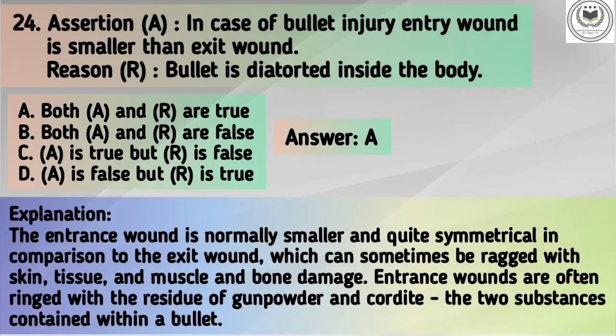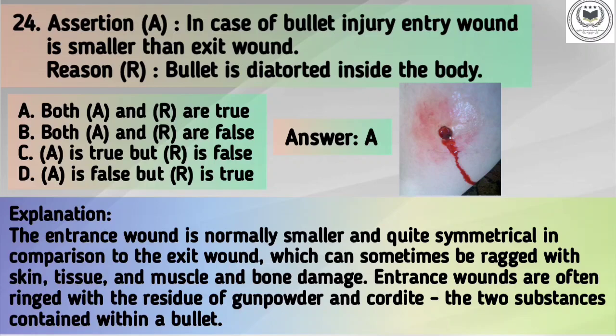Explanation: The entrance wound is normally smaller and quite symmetrical in comparison to the exit wound, which can sometimes be ragged with skin, tissue, muscle, and bone damage. Entrance wounds are often wrinkled with the residue of gunpowder and cordite, the two substances contained within the bullet.